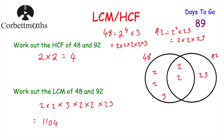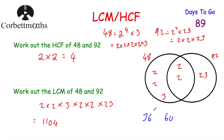To summarize the method: write both numbers as a product of primes, draw a Venn diagram, put shared prime factors in the middle and extras on each side. Multiply the numbers in the middle for the highest common factor, and multiply all numbers together for the lowest common multiple. Now try: find the HCF and LCM of 36 and 60.